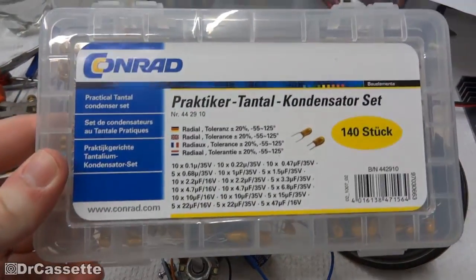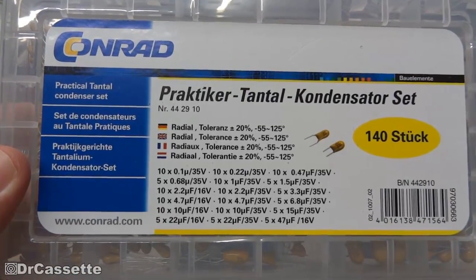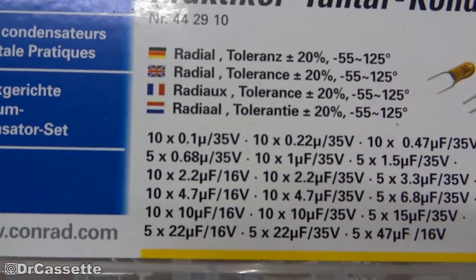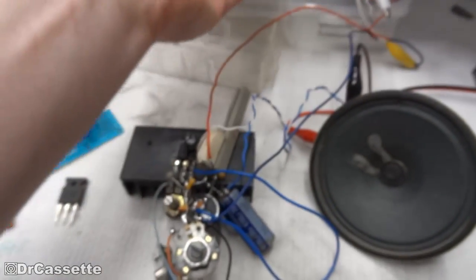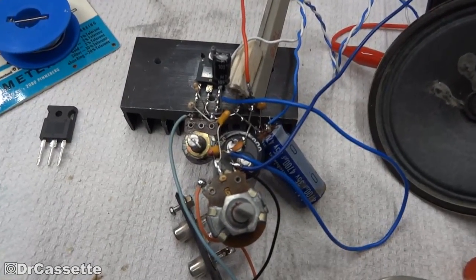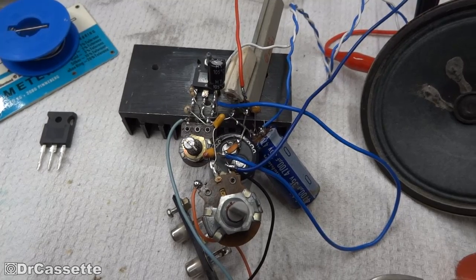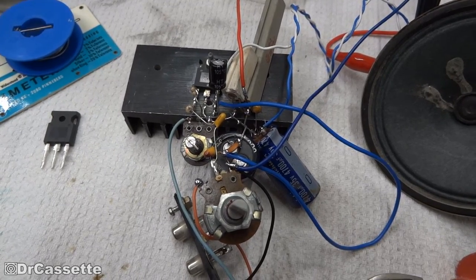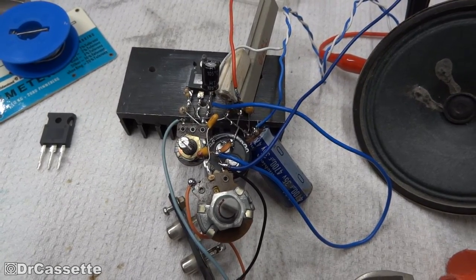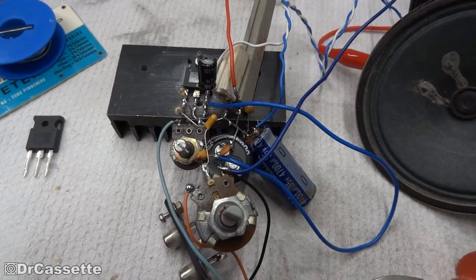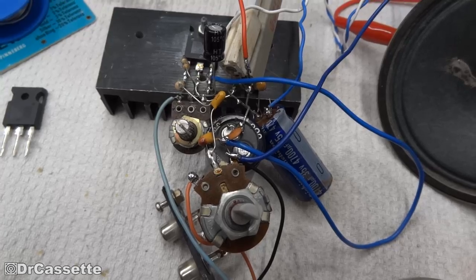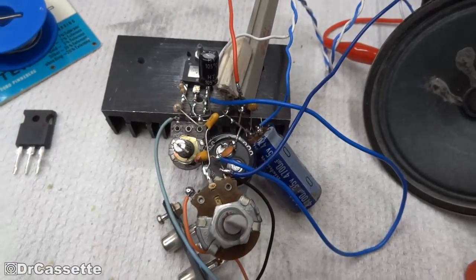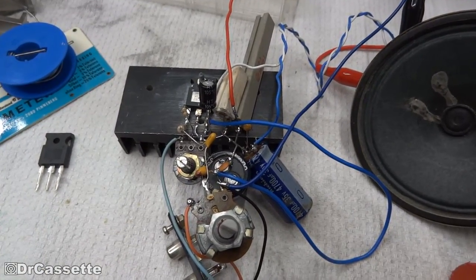Because I did use some tantalum capacitors that are rated for 35 volts. They're both rated for that voltage. Well, I finally realized tantalum capacitors are polarized and I had them in the wrong way. So, anyway, replace that one right there with a normal ceramic capacitor. That one doesn't matter. That's just for good sound quality.